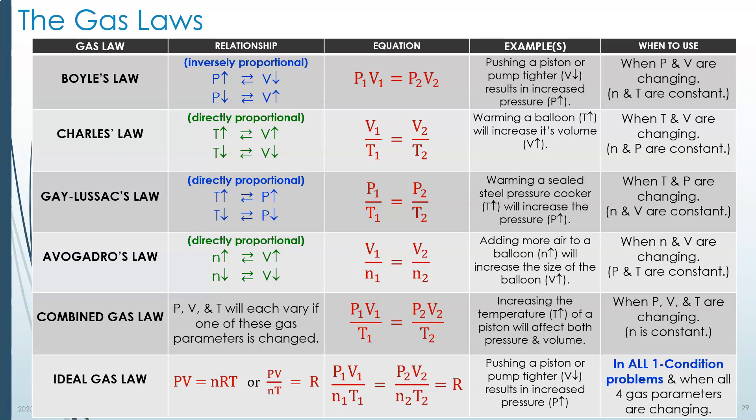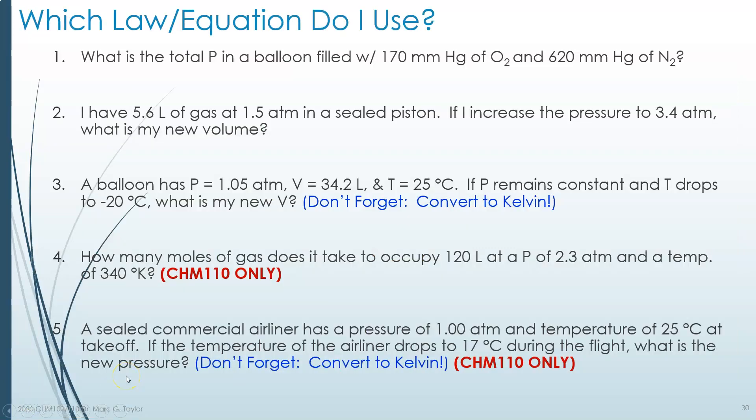Let's look at some possible problems and decide which formula you're going to use. What is the total pressure in a balloon filled with 170 millimeters of mercury of oxygen, and 620 millimeters of mercury of nitrogen? So you're given a partial pressure of two gases, and you're asked for total pressure.